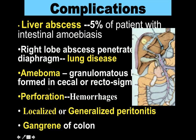Another condition very commonly associated with this parasite is amoebomas. Amoebomas are defined as granulomatous or chronic infectious lesions which are formed in the cecal or rectosigmoidal area. Additionally, the intestines can be perforated as the trophozoites bore their way through the intestinal wall, producing perforation and hemorrhages. When they reach the peritoneum, it can cause localized or generalized peritonitis, and we can also see gangrene of the colon.